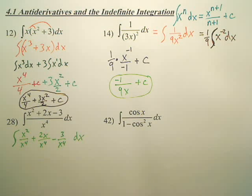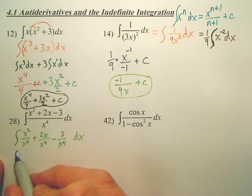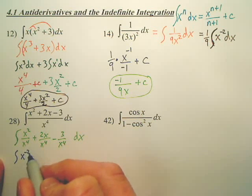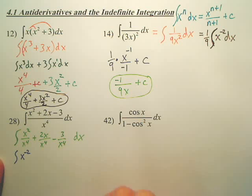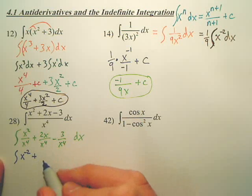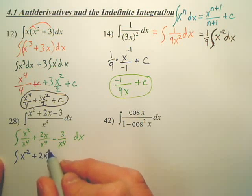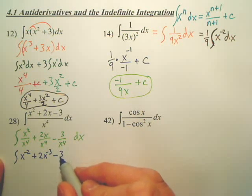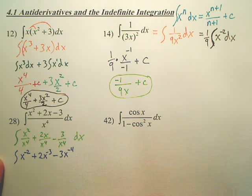Next, I am going to simplify each piece. So this becomes x to the negative second. This one becomes 2x to the negative third. And this one becomes negative 3x to the negative fourth dx.